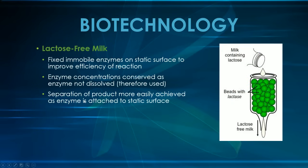In the production of lactose-free milk, you have fixed immobilized enzymes called lactase. You have beads inside a tube, and you run milk that contains lactose through it. The lactase digests all the lactose in the milk so the following product will be lactose-free. This is pretty useful because the beads with lactase can be used over and over again — they're basically reusable.